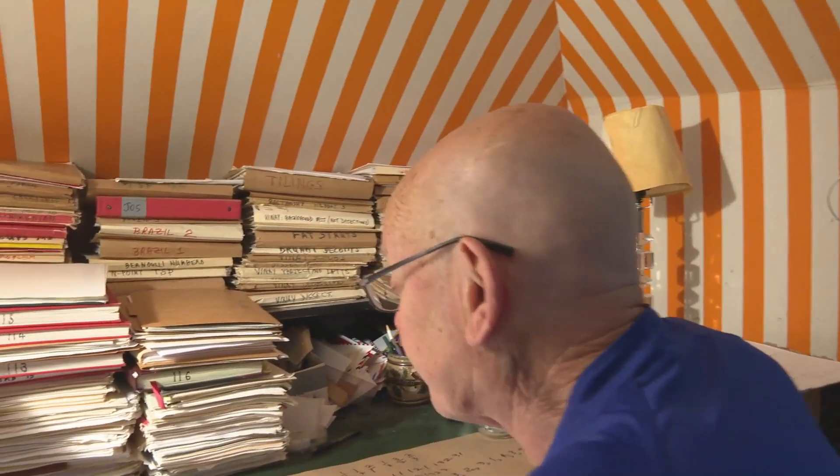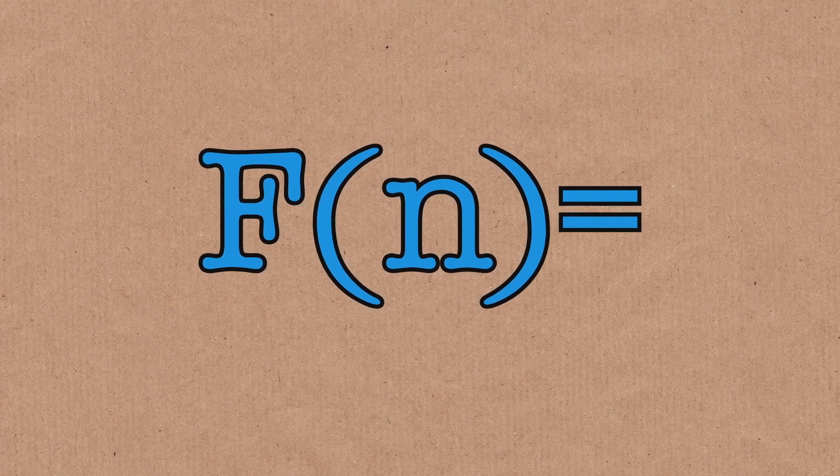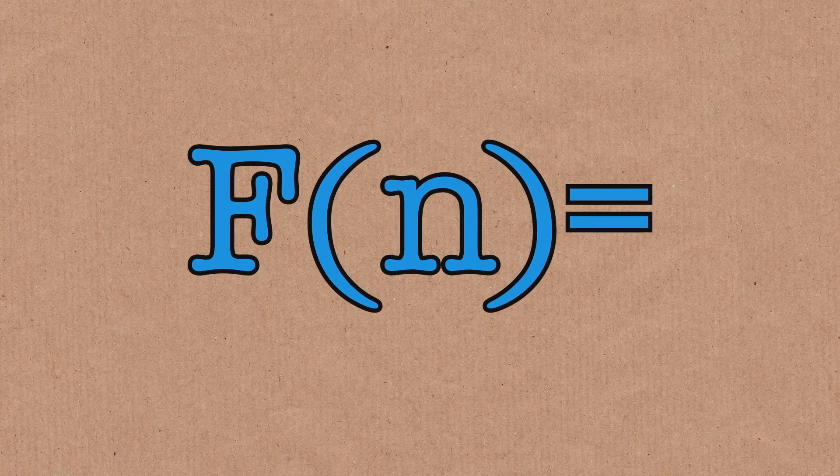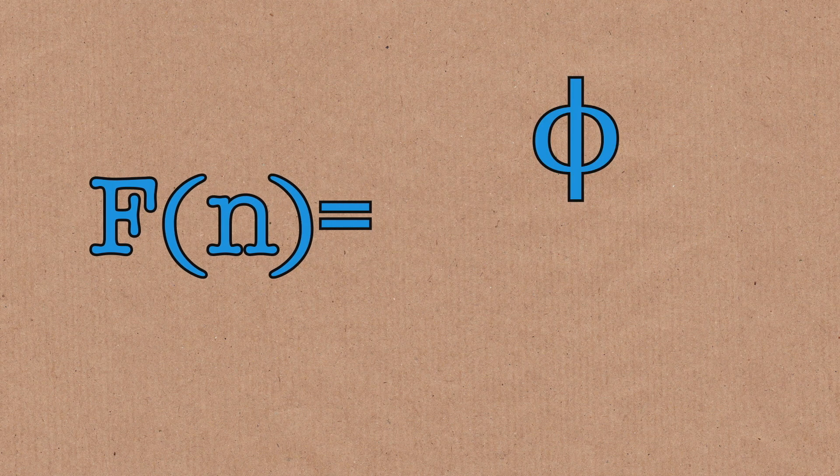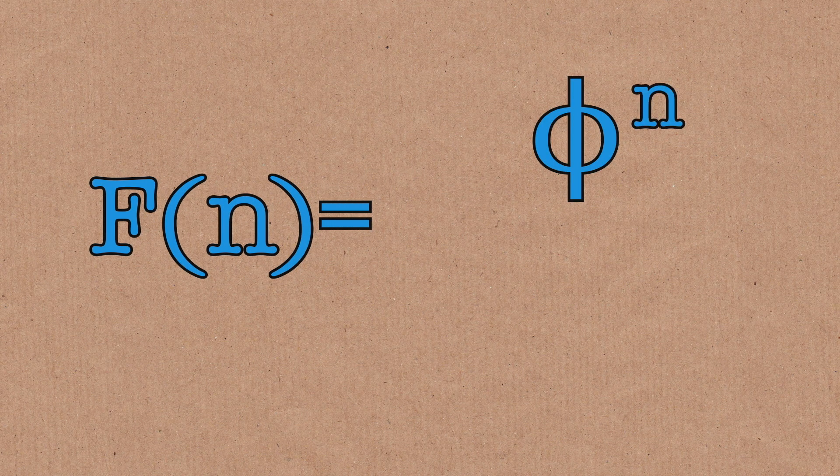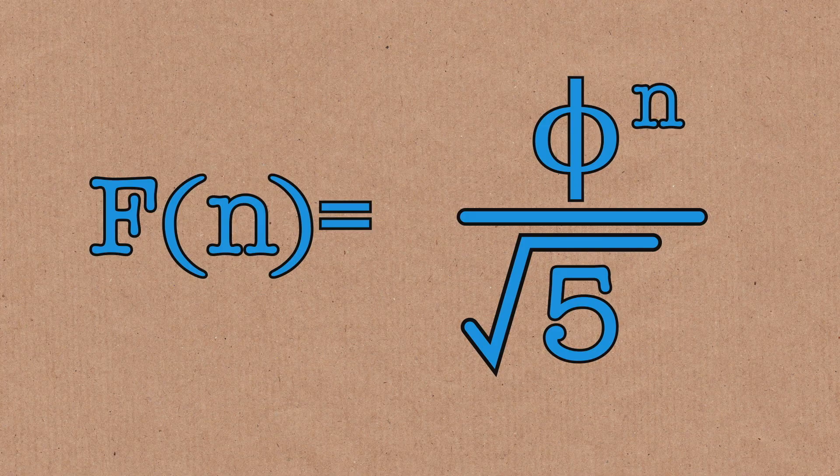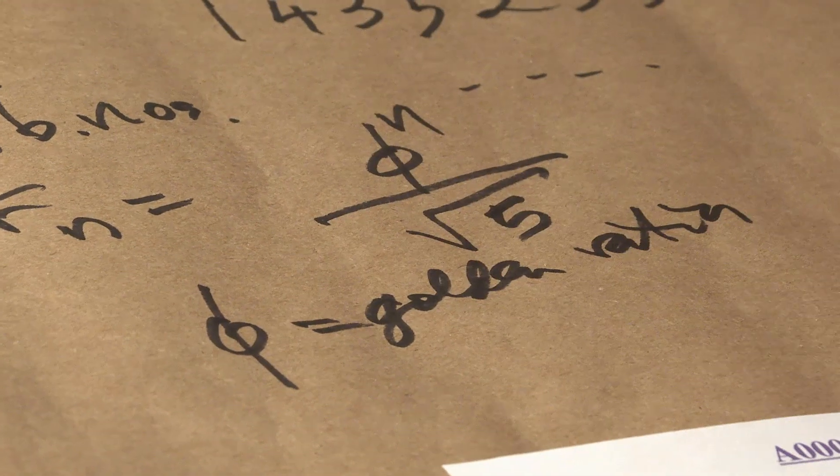So the thing about the Fibonacci numbers, as you know, f of n is an integer, but you get it almost exactly by taking the golden ratio, raising it to the nth power, dividing by root 5. That number is very, very close to an integer.